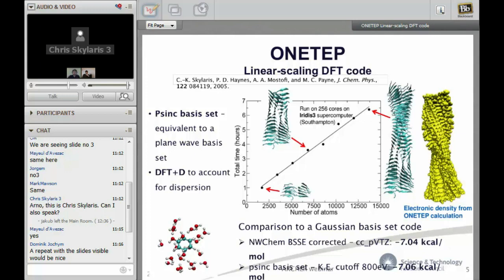ONETEP is the code which has been developed in the last 15 years and it's a linear scaling DFT code. I'm not going to get too deep into the theory because that's outside the topic of the webinar but I'll give you the essential features. The linear scaling DFT approach is an effort in a community that has been going on for almost three decades now, and various theories have been developed to reformulate density functional theory so that its computational effort increases linearly with the number of atoms.